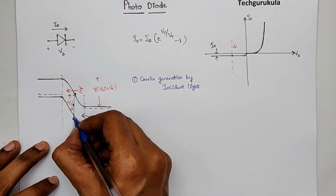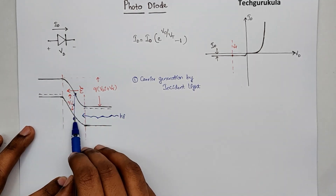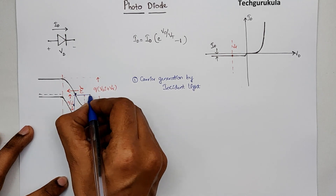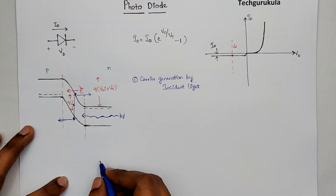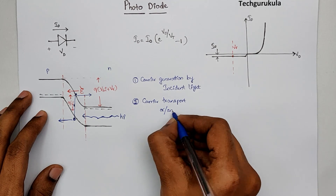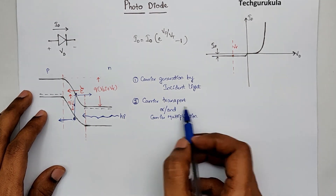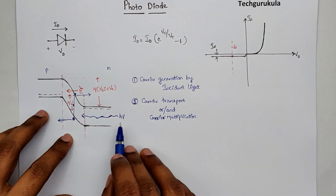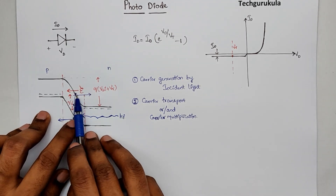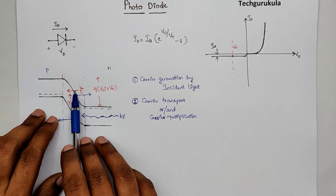As electron-hole pairs are generated in the depletion region where we have an electric field, this electric field separates the electron-hole pairs — holes are sent to the P-side and electrons are sent to the N-side. This is the second point: carrier transport. In some cases there is also carrier multiplication, especially in the avalanche breakdown region. The carrier transport happens because of the existing electric field in the depletion region.